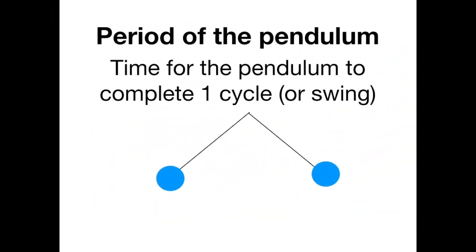Now it's time to wrap things up and review before you do your quiz. The period of a pendulum is the time for the pendulum to complete one cycle, or one swing. That means it is the time for the pendulum to swing away from one fixed point and back to that fixed point, and that counts as one swing.